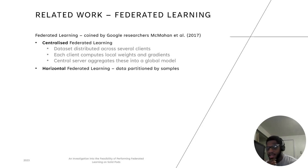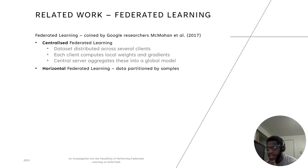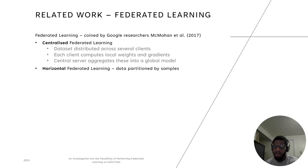Federated learning, as introduced by Google researchers in 2017, was envisioned as a centralized horizontal system. Centralized refers to the learning being distributed across several clients, where each client computes local weights and gradients, and a central server aggregates these into a global model. Horizontal federated learning means that the dataset is partitioned by samples.